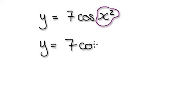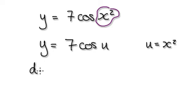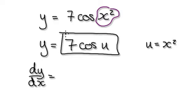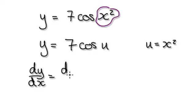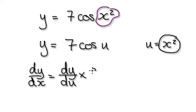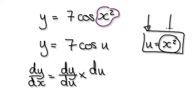Y equals 7 cos, and then let's call this u, where u is x squared. You would then apply the chain rule, so dy by dx equals — looking at this here — you would do dy by du, so you would differentiate it with respect to u, but then you would times it with the differential of this, which is du by dx.